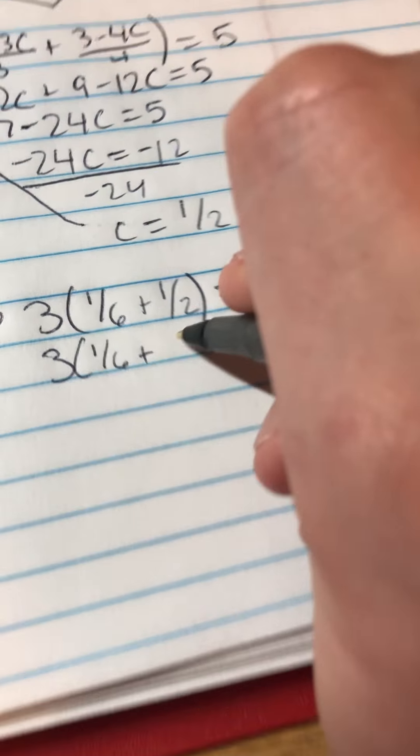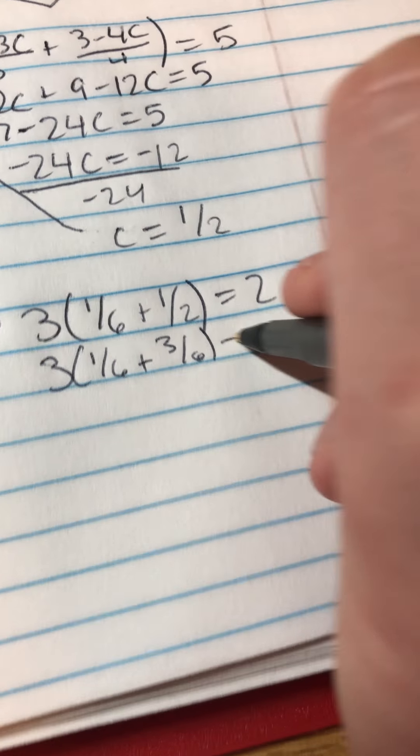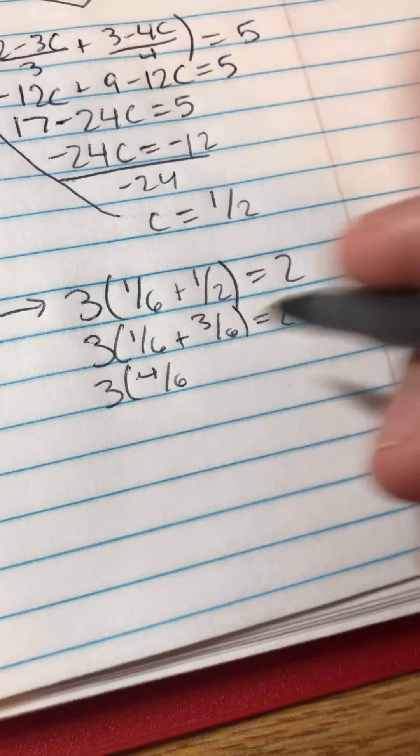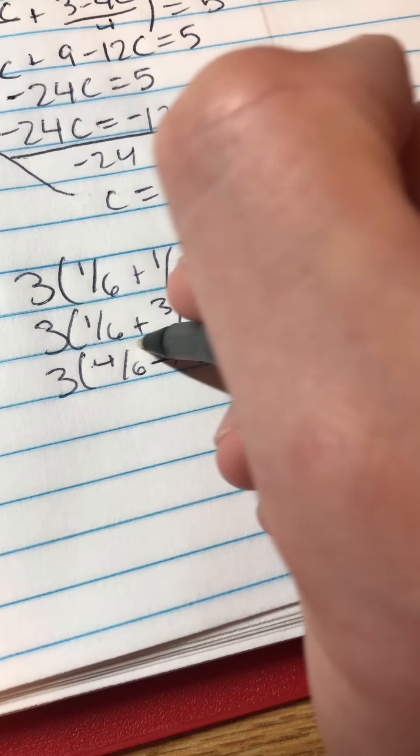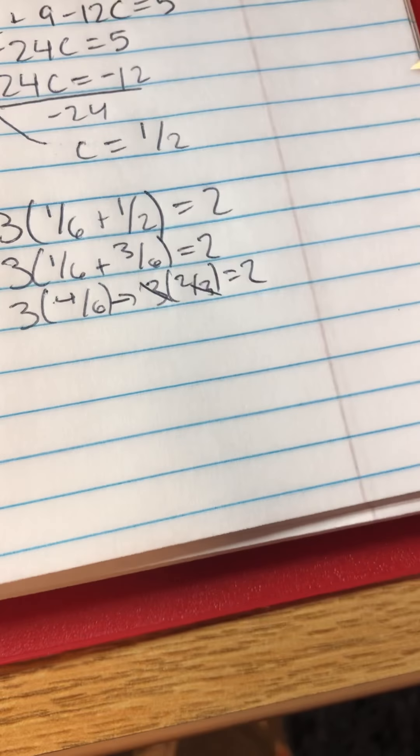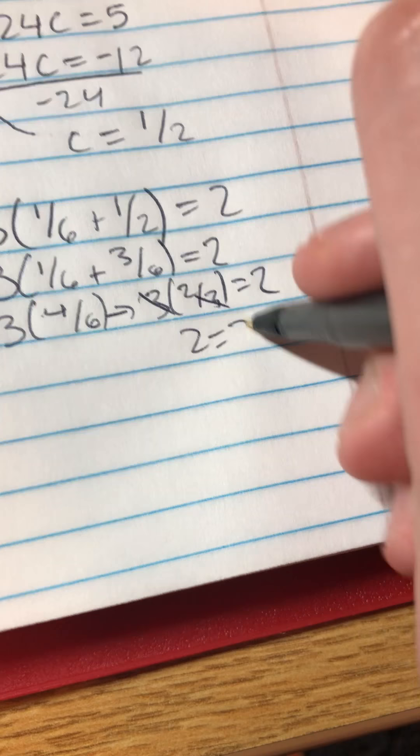And then you're going to get 3 times 1/6 plus 3/6, just simplifying so we can add them. And then we get 4/6, or 2/3. And 3 times 2/3 is just 2, so you're going to get 2 equals 2. And that checks out.